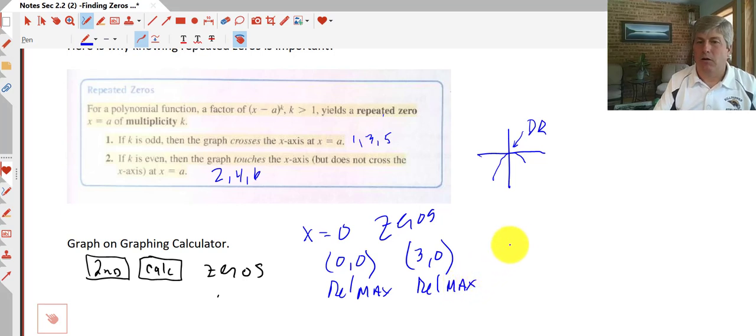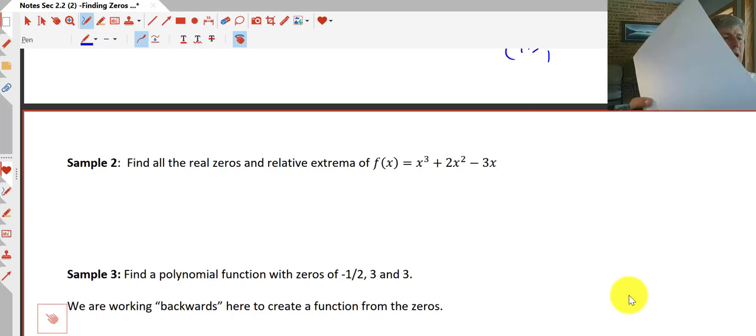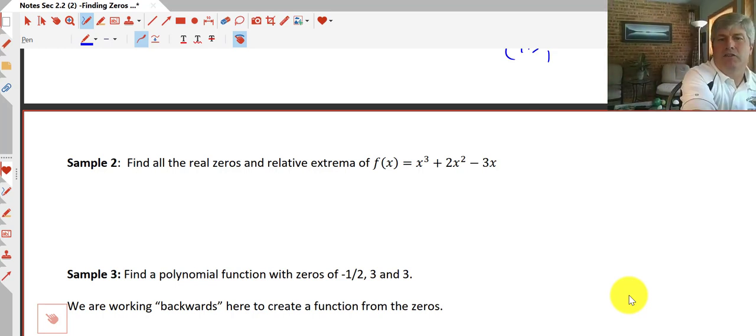And then our relative min was at x was 1.5 and negative 1.27. Sample two is the same question that we just did here. So I'm not going to repeat that.